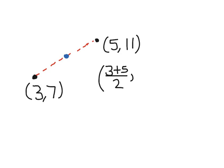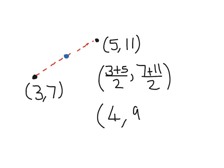And the average of the y's, similarly, is going to be 7 plus 11, divided by 2. So that's going to be 8 divided by 2 to give us the answer 4, and 18 divided by 2 to give us 9.